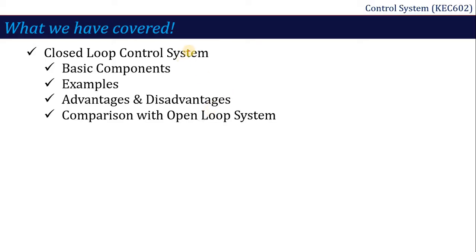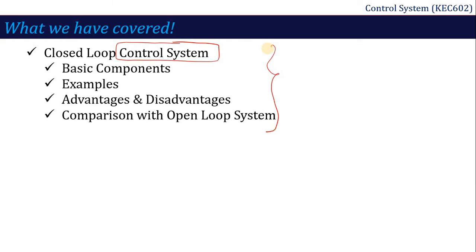In the previous lecture, we talked about what is a control system, what is an open loop system, and what is a closed loop system. We discussed the basic components in both systems, like fan, AC, geyser, emulsion rod — different types of examples of open loop and closed loop systems — and then the advantages, disadvantages, and comparison between open loop and closed loop.